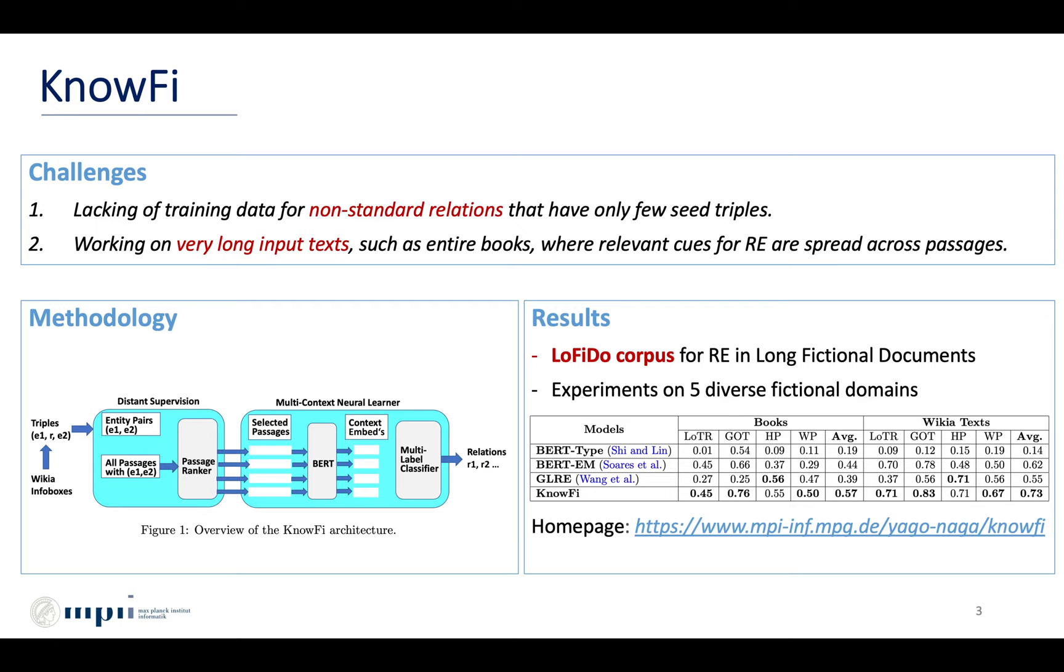Extensive experiments with long books on five different fictional domains show that KnowFi clearly outperforms state-of-the-art relation extraction methods. We also introduce the LoFiDo corpus for relation extraction in long fictional documents. More details can be found at the link below. Thank you for your attention.